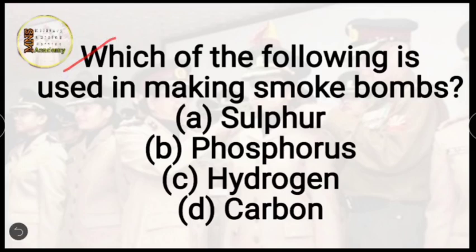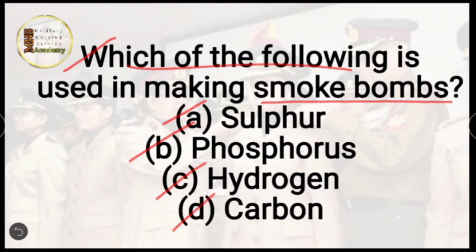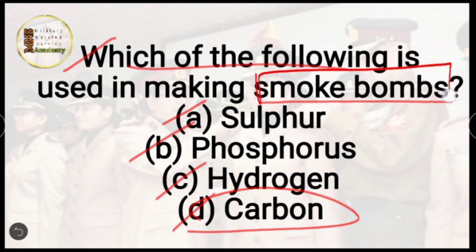Question 47: which of the following is used in making smoke bombs? Options are sulphur, phosphorus, hydrogen, or carbon. The correct answer is option D, carbon. Smoke bombs produce colored smoke when ignited and are used for photography, protests, and other purposes.